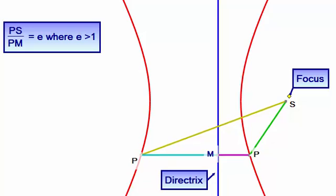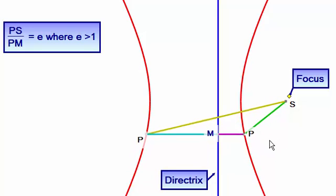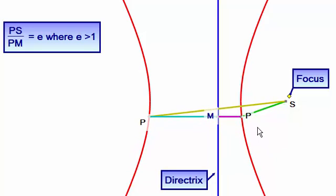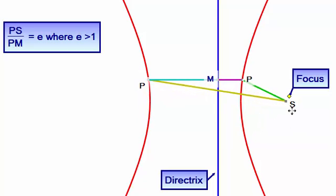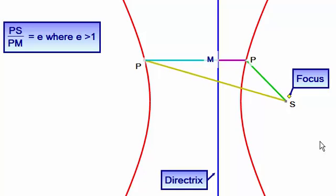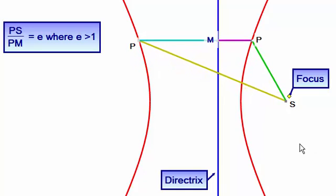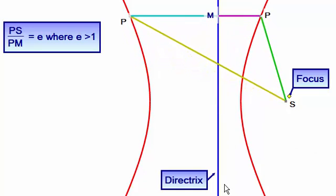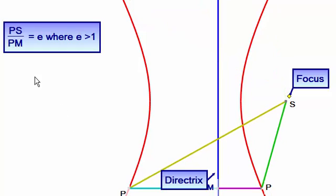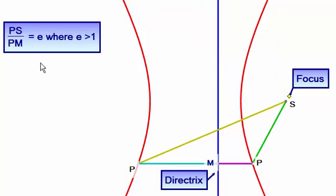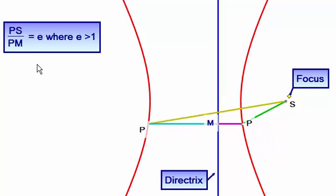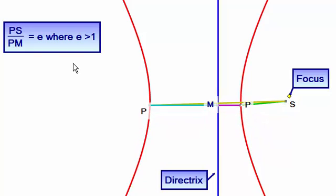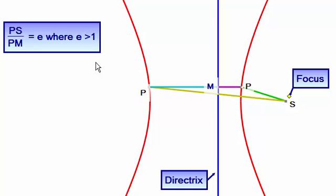Remember that I showed you in an earlier video that it's the locus of a point P that moves in such a way that the distance from P to a fixed point S called the focus, when you compare it to P to a fixed line called the directrix, that ratio always remains a constant and we call that constant E where E stands for the eccentricity and E is greater than 1 for a hyperbola.